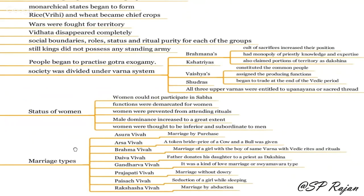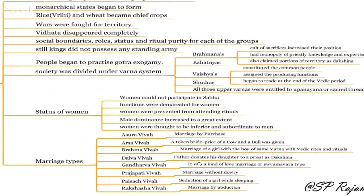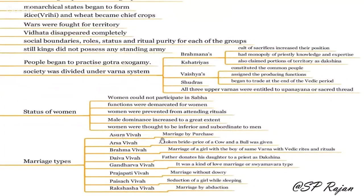Types of marriages during the Vedic period — most important for competitive exams: Asura Vivaha means marriage by purchase — a person buys a woman and marries her. Arsa Vivaha means a cow or bull is given as bride price. Brahma Vivaha means marriage of a girl with a boy of the same varna, with same rituals — same-caste marriage with Vedic rituals, still seen today.